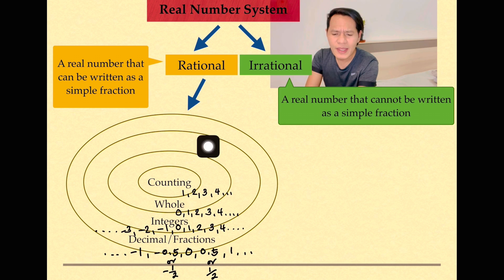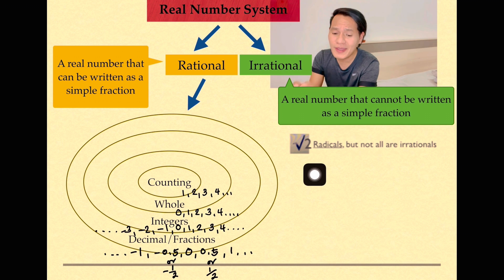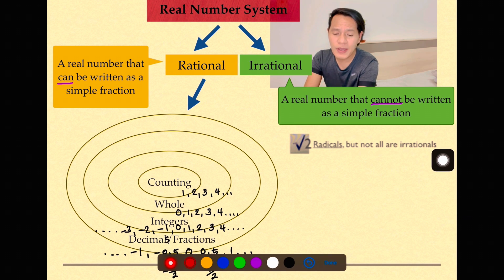Now, next one is the irrational. The first one here, we have the radicals. Remember that when we say irrational, these numbers cannot be written in the form of a fraction. But here in the radicals, not all are irrationals. For example, the root of 4, which is equal to 2. Basically, not all radicals are irrationals, except for the square root of 2 and other numbers wherein you cannot express it in a fractional form. We call them irrationals.